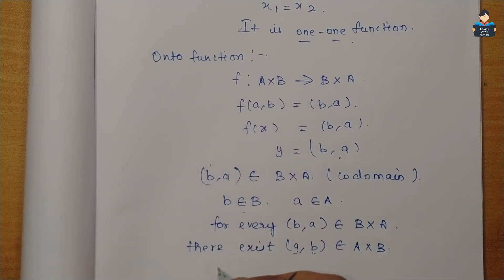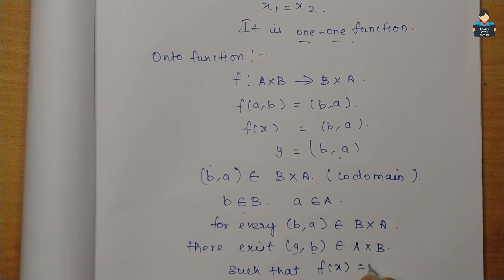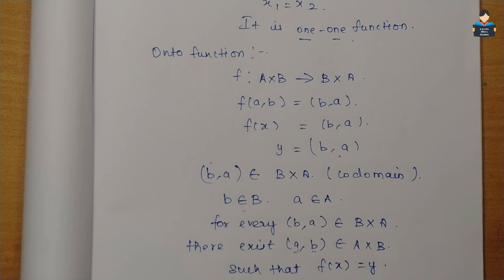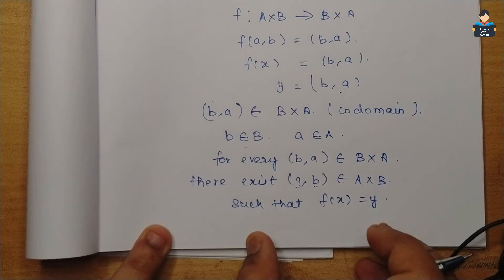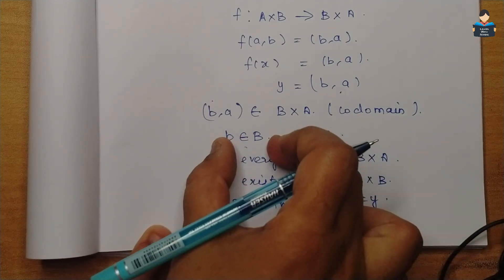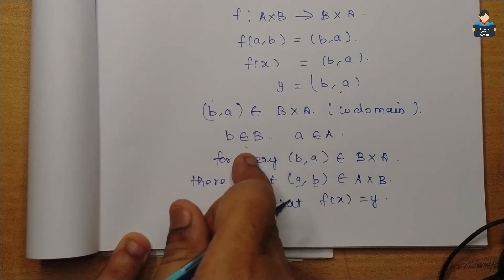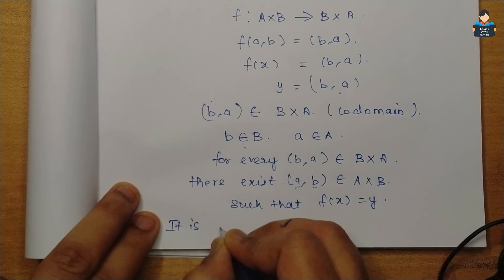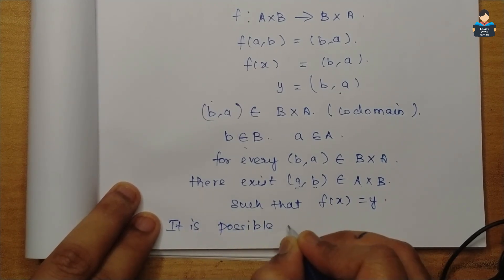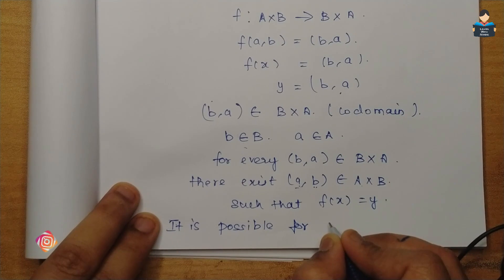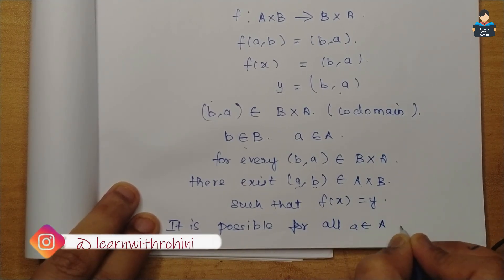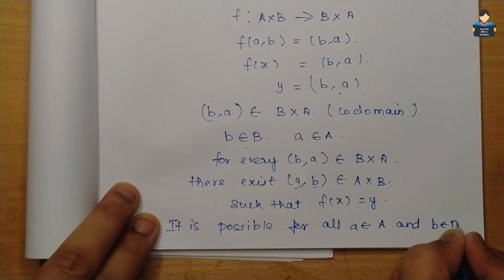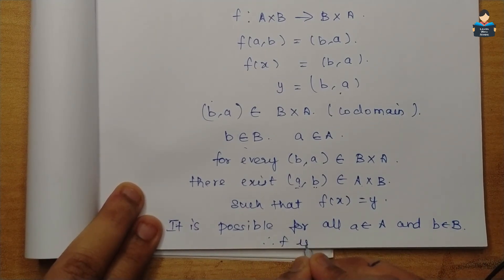Such that f(x) = y. This condition holds for all a belonging to A and b belonging to B. Therefore, f is an onto function.